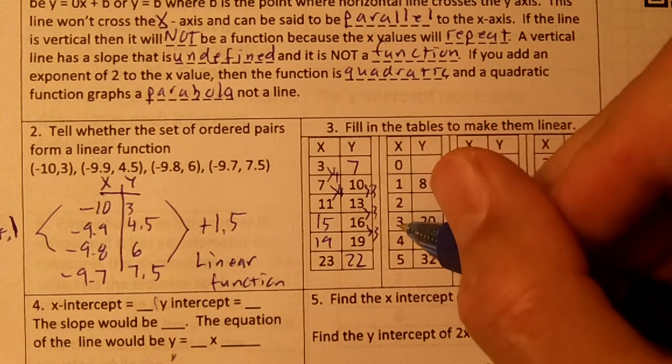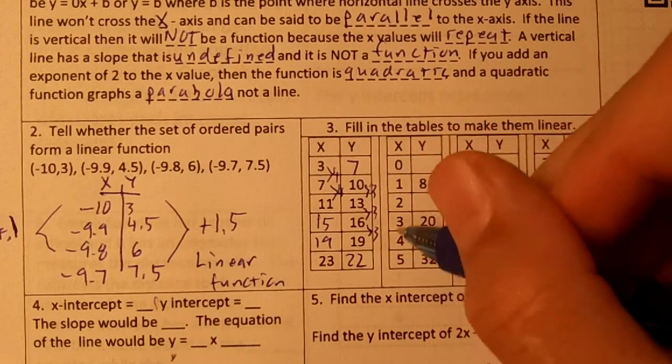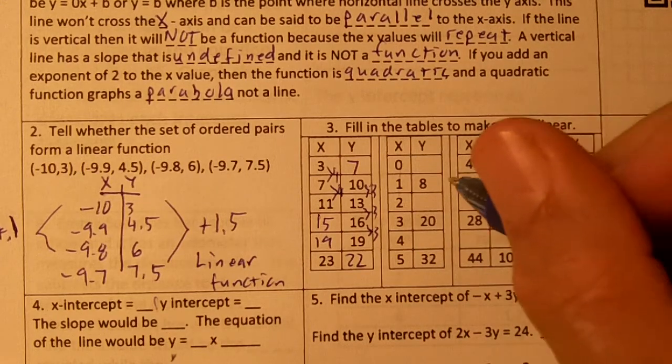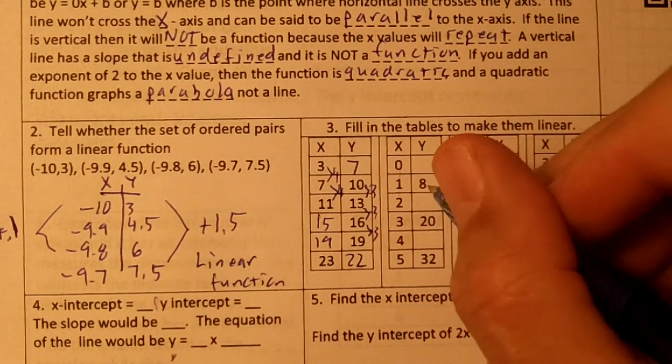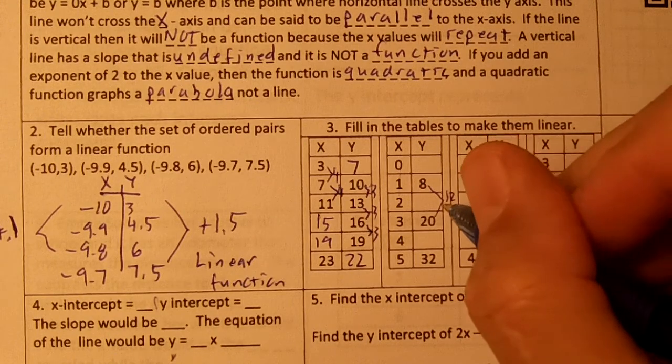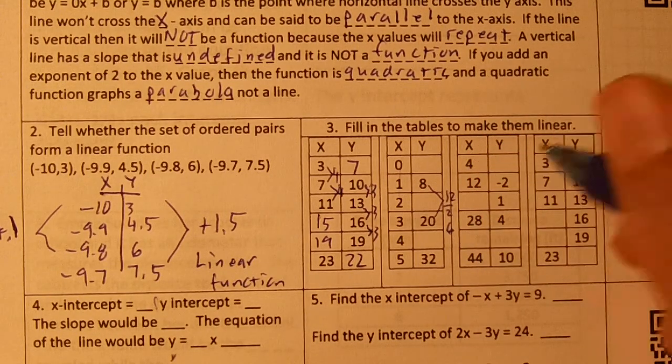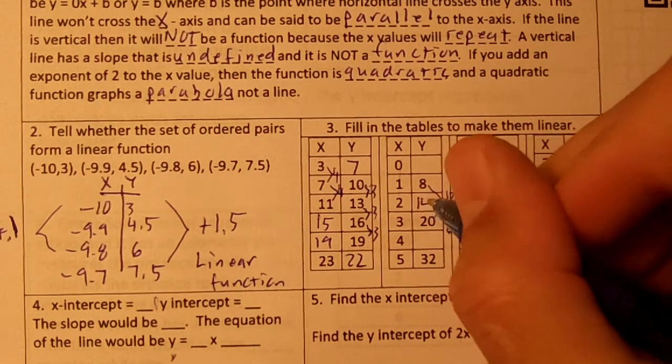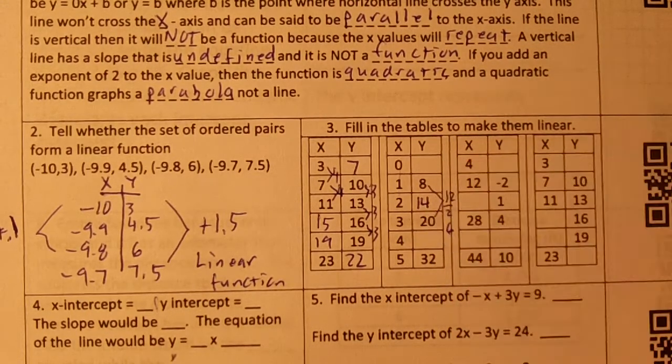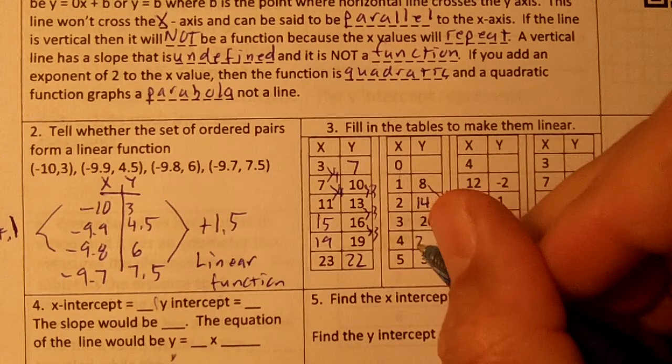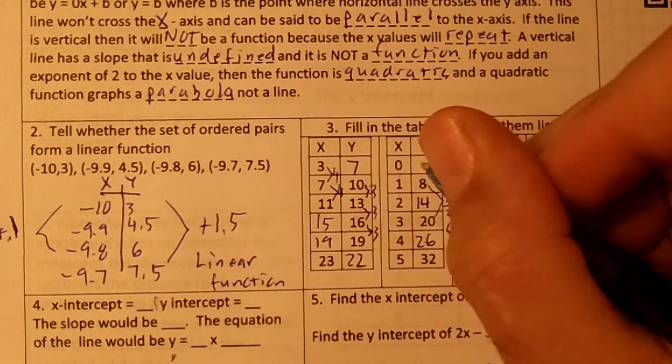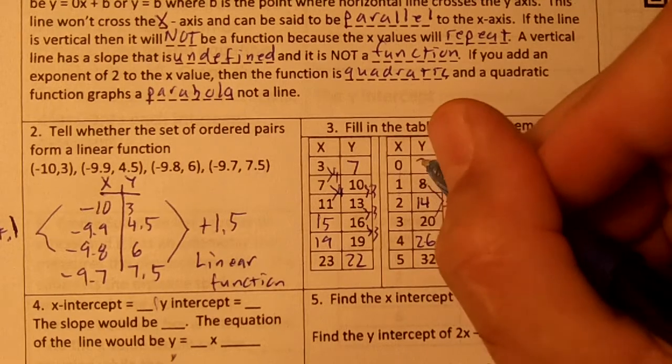Over here, our x tables. This is the most used set of domain. It's your 0, 1, 2, 3, 4, 5, and we need to find our y values. The difference here is 12. Half of 12 is 6. So our constant rate of change is going to be 6. 8 plus 6 is 14. 14 plus 6 is 20. 20 plus 6 is 26. And 26 plus 6 is 32. To get to the 0 number, 8 minus 6 would be 2.